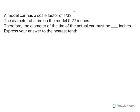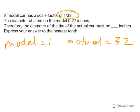If you look at this scale factor, that means if the model is 1, then the actual is 32. So the actual is always 32 times bigger than the model. That's what the 1 to 32 stands for.